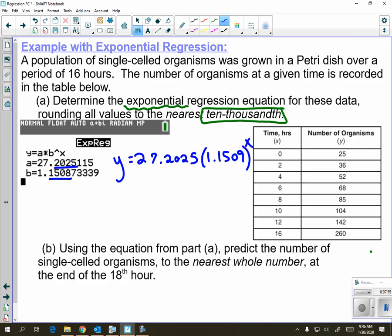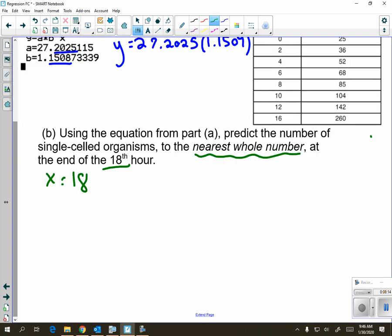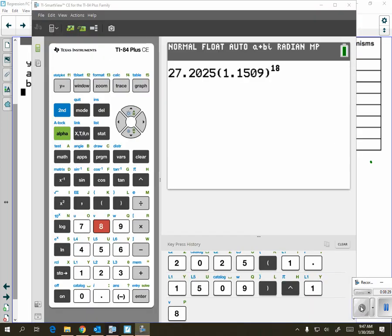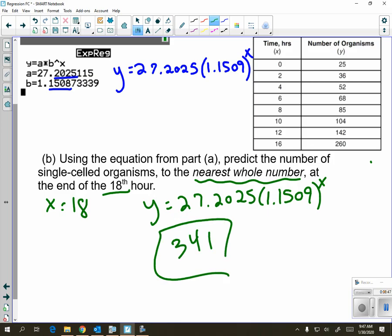If you read part b, they want you to use the equation from part a to predict the number of single-celled organisms to the nearest whole number at the end of the 18th hour. All you have to do for this is make x equal to 18. You're going to use the equation that you have, plug in 18 to get your answer. I have the equation in my calculator, I hit enter, and it tells me rounded to the nearest whole number, I have 341. So 341 single-celled organisms at the end of the 18th hour.